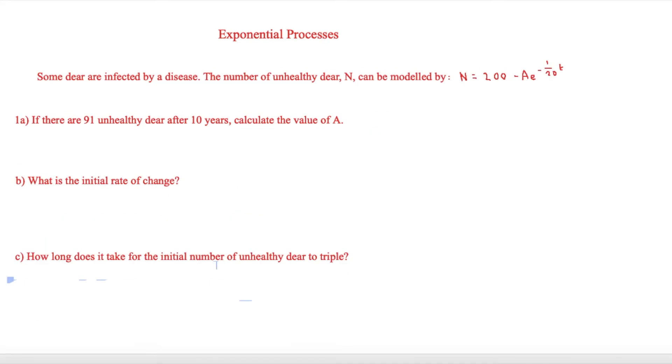Here we have another question which is slightly harder. It says that some deer are infected by a disease, and the number of unhealthy deer n can be modelled by n equals 200 minus A times e to the power of minus 1 over 20t. The first question is asking if there are 91 unhealthy deer after 10 years, calculate the value of A. We just need to put these in and find out what A is.